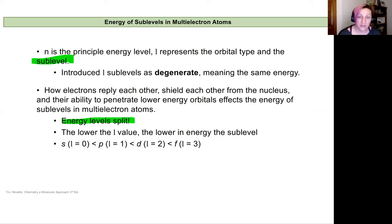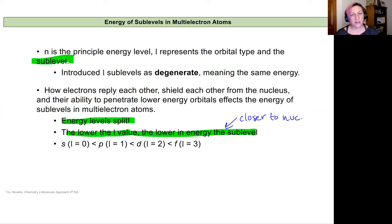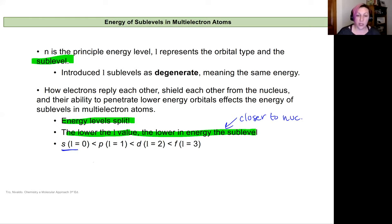This means our energy levels are split. The lower the l value, the lower in energy the sub level is, because it can penetrate closer to the nucleus. Remember: the further an electron is from the nucleus, the higher energy and less stable it is; as it gets closer, it decreases in energy and increases in stability. So s orbitals are the lowest in energy, and f orbitals are the highest in energy.